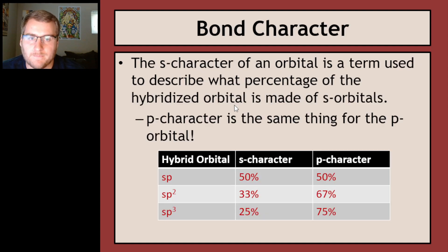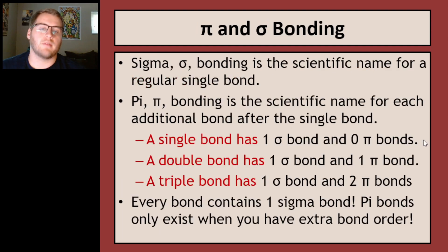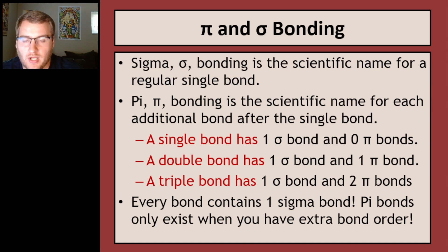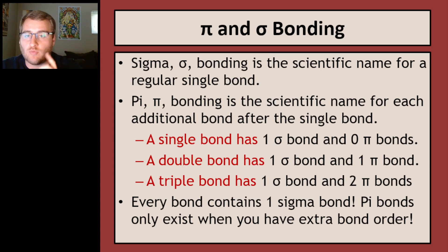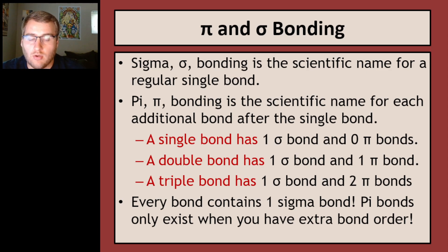Pi bonds are a bit more complicated. Each additional bond beyond the first is a pi bond. The first bond you make is always a sigma. A double bond has the original sigma plus one new pi bond — so a double bond is one sigma and one pi. A triple bond has one sigma and two pi bonds. So every bond — single, double, or triple — has one sigma bond. The pi bonds are what change: a single bond has no pi bonding, a double bond has one pi bond, and a triple bond has two pi bonds.